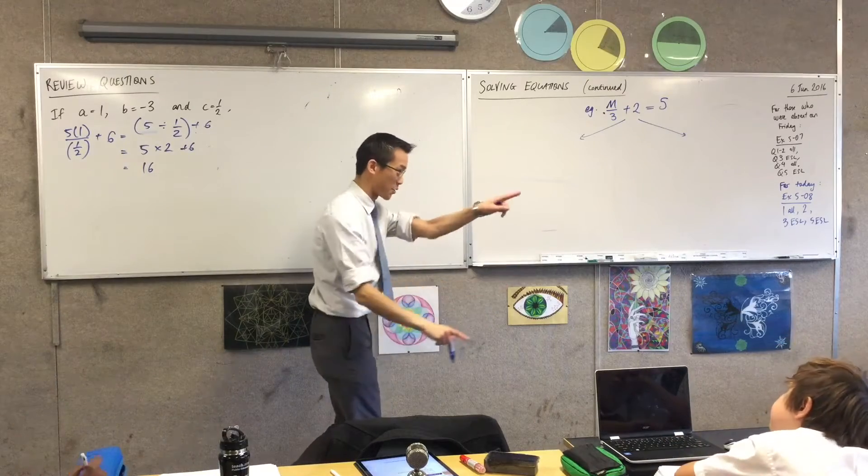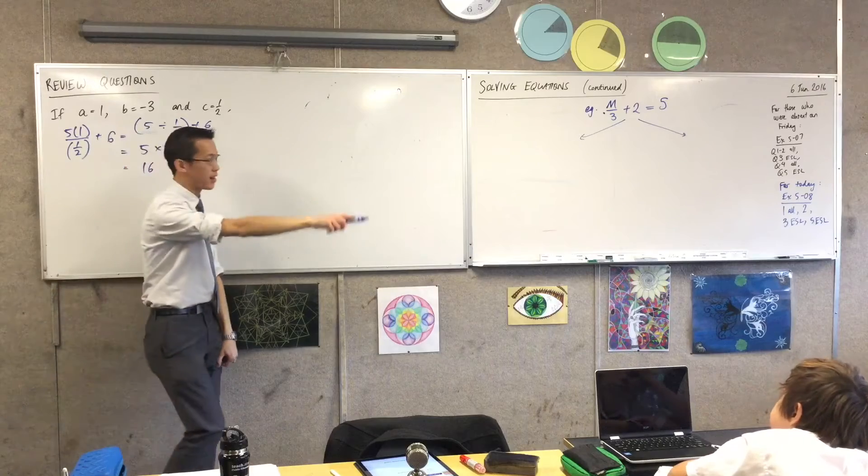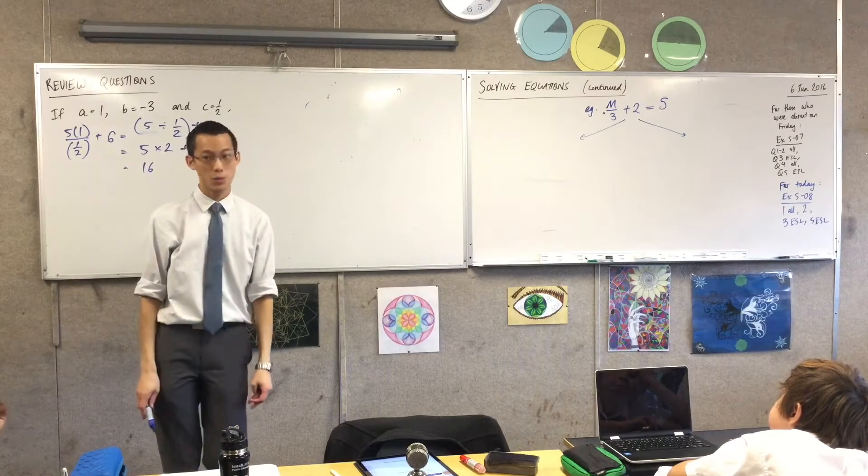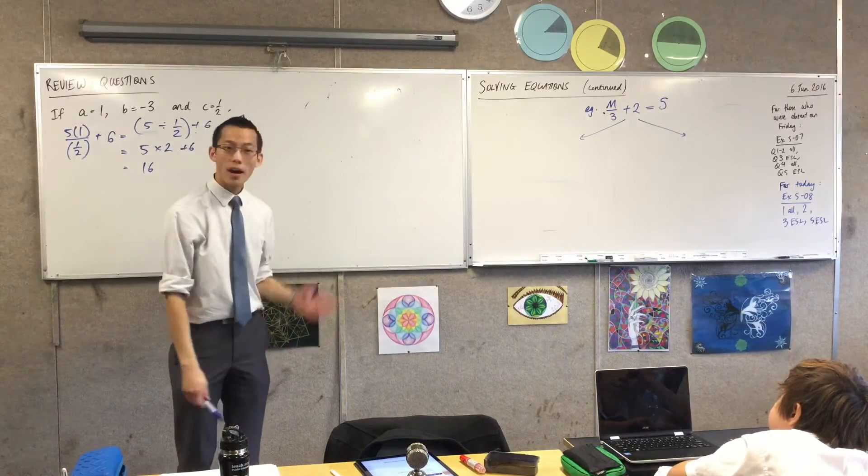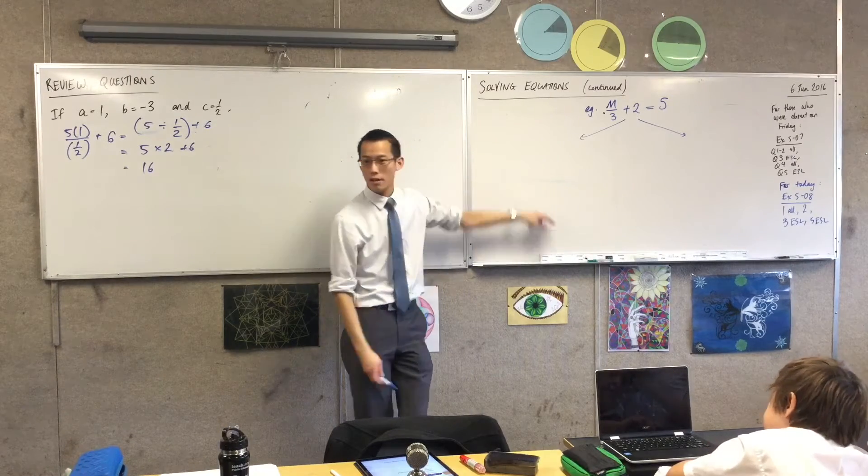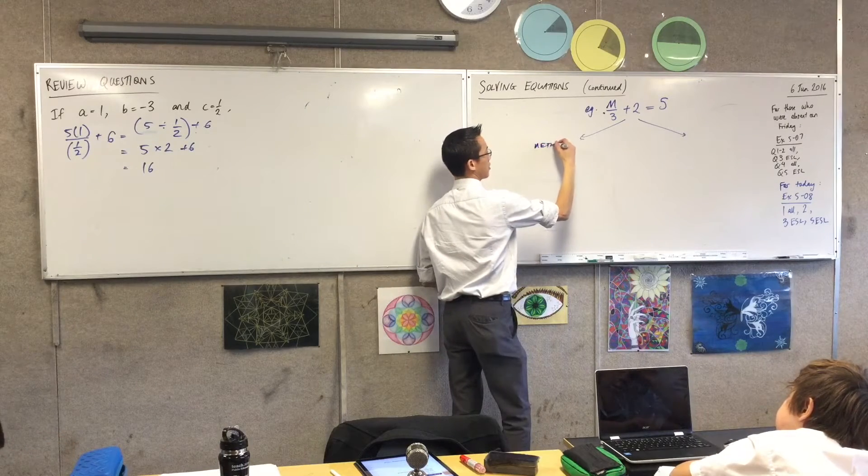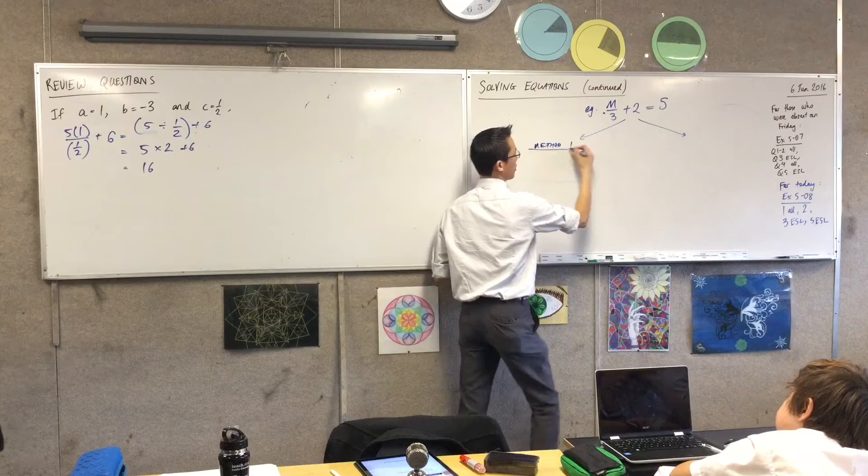I want you to hold that thought. I'm going to get to you in a minute, Brad. I want to think about before we get to the right answer, how do we get the right answer? What can we do with this equation to get towards a solution? So I'm going to show you two methods. You might like to make two little headings: method one and method two.